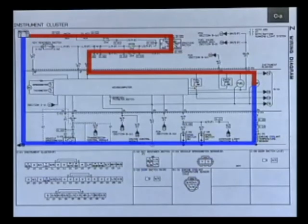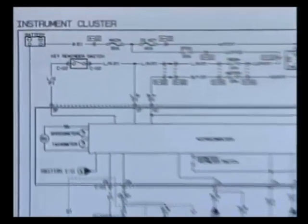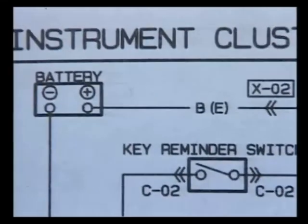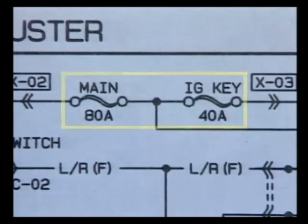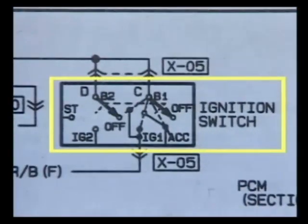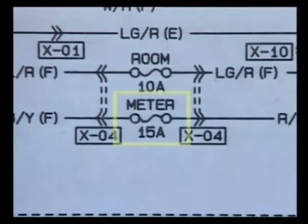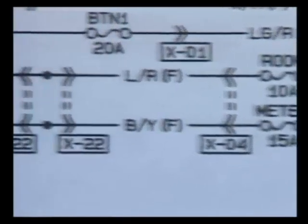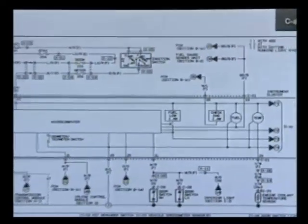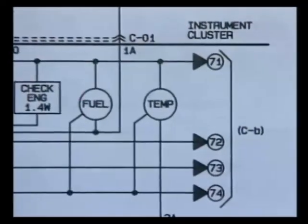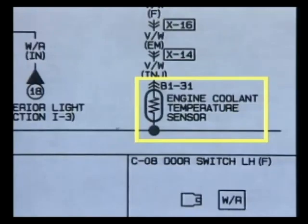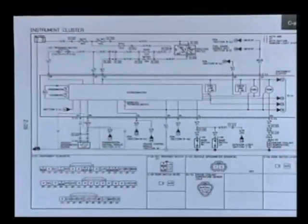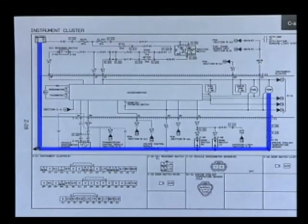On most wiring diagrams, the power source is always at the top of the page and the ground is at the bottom. Starting at the top, we trace the power side: from the positive battery terminal, current flows through the main fuse, the ignition key fuse, the ignition switch, and the meter fuse to the gauge. On the ground side, current flows from the gauge through the engine coolant temperature sensor and back to the battery through the ground return path.